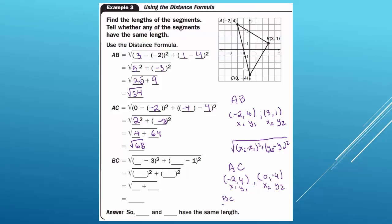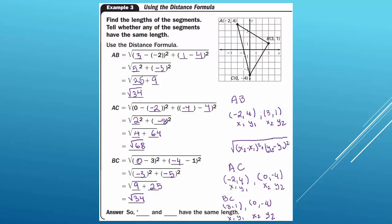Finally, for segment BC: B is at (3, 1) and C is at (0, −4), so x1=3, y1=1, x2=0, y2=−4. BC equals the square root of (0 minus 3) squared plus (−4 minus 1) squared. That's the square root of (−3) squared plus (−5) squared, which is the square root of 9 plus 25, giving us the square root of 34. We can see that AB and BC have the same distance, so line segment AB and line segment BC have the same length.